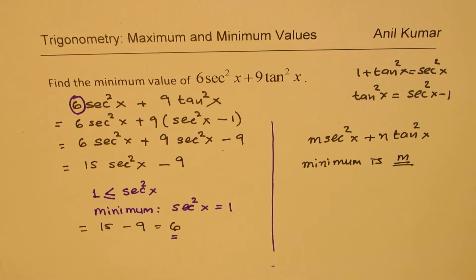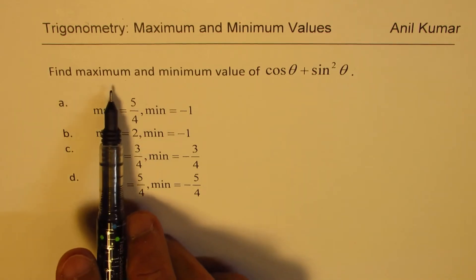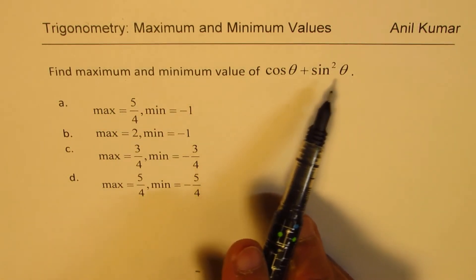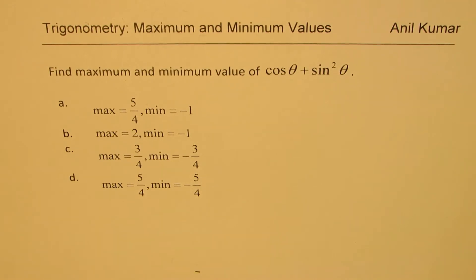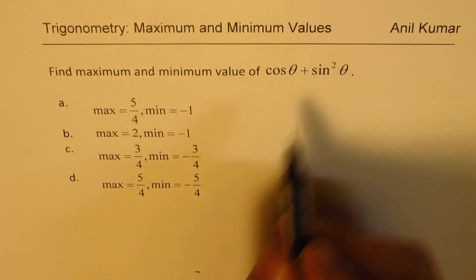Let's move on to the next question — one of the most interesting ones, and I expect it to appear in this year's test paper. Find the maximum and minimum value of cos theta plus sine squared theta. Four options are given; you can pause the video, answer the question, and then look at my suggestions. We can write all terms in terms of cos: cos theta plus sine squared theta equals cos theta plus 1 minus cos squared theta.